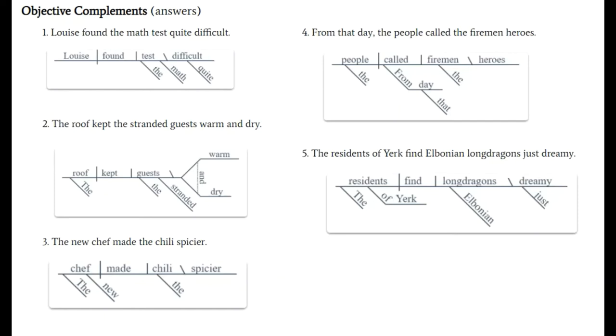For four, here's another one we had to rewrite, and we end up with, from that day, the people called the firemen heroes. Again, we need to have a direct object. Otherwise you can't have an objective complement. And this time our objective complement is a noun. So let's look. The people is the subject. What did they do? They called. Called who or what? They called the firemen. Direct object. Called the firemen what? So there's an adjective question. And the answer is heroes. So heroes is the objective complement here. And when did this happen? From that day. So they called when? And here's an old adverb question. Called when? Answer, from that day.